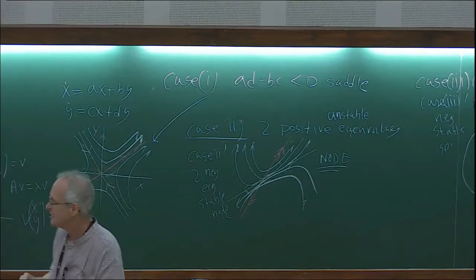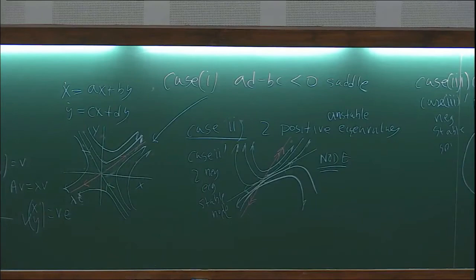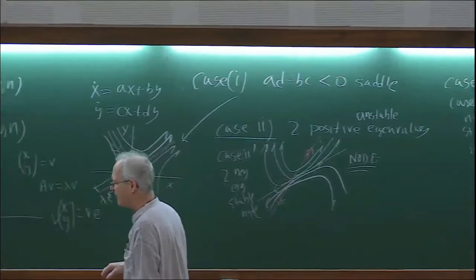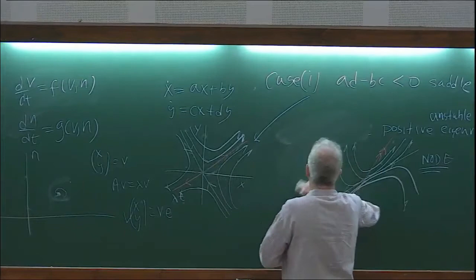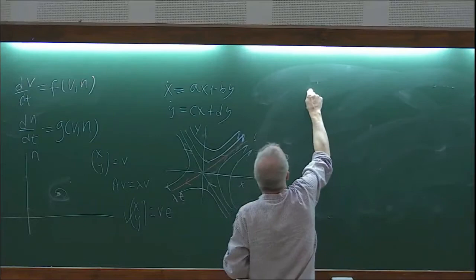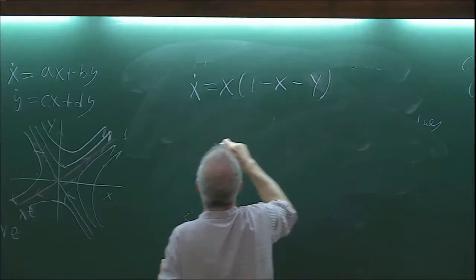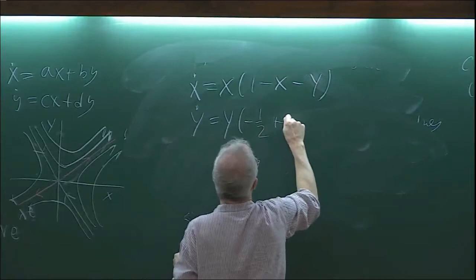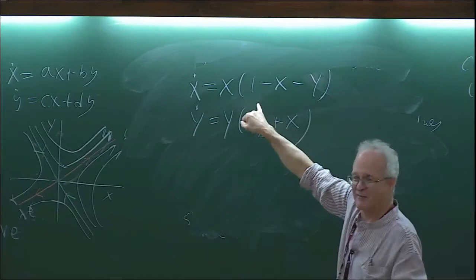Before we get to the Morris-Lecar equations, I want to apply that to our fox and rabbit example. So remember our foxes and rabbits: x-dot equals x times (1 minus x minus y).